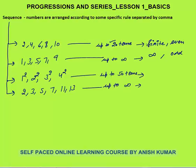The third sequence is 1², 2², 3², 4² up to 50 terms. This is also a finite sequence. The logic is that you have the squares of natural numbers starting from 1 up to 50², because the number of terms are 50. So this is the squares of natural numbers — N² — starting from 1.